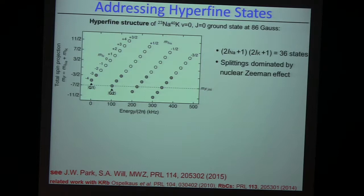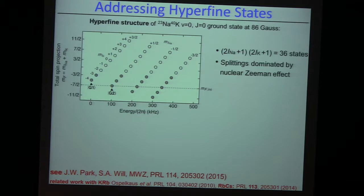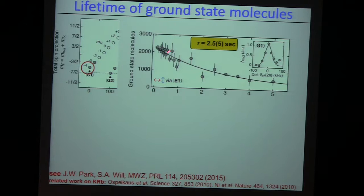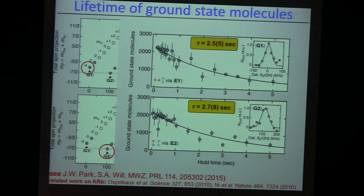The hyperfine structure is something you have to learn about when working with these molecules. In the ground state it's not even so bad — I call this not so bad — it only has 36 states, coming from the sodium and potassium nuclear spins — three-halves and four — giving you 36 states to play with. We like to be down in the absolute ground state. The first interesting thing to ask is: is this system stable? Is it stable in the ground state — maybe also in excited hyperfine states? And that is the case. We have several seconds lifetimes.